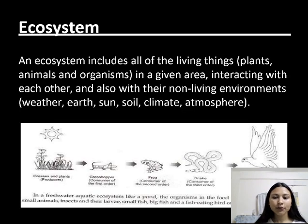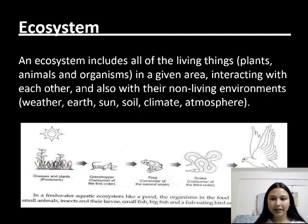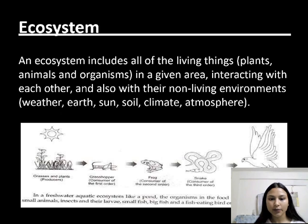Children, do you know what is an ecosystem? An ecosystem includes all of the living things — i.e. plants, animals, and organisms — in a given area, interacting with each other and also with the non-living environment, i.e. weather, earth, sun, soil, climate, and atmosphere. These are included in the non-living environment.